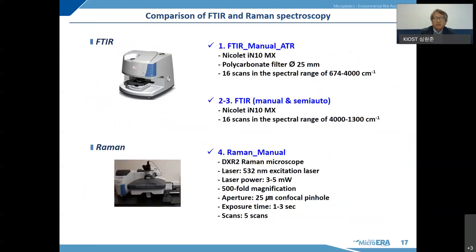This is the specification of the instrumentation we used. For the manual ATR method, we used a Nicolet iN10 MX version. In this case, we used a polycarbonate filter rather than anodisc, because the ATR probe could not be used with anodisc — it's very fragile. For FTIR manual and semi-auto methods, we used the same machine, but the spectral range changed slightly due to anodisc IR absorption. For Raman, we used a Thermo Scientific DXR2 Raman microscope with a 532-nanometer laser at 3.5 milliwatt power, a 25-micron pinhole, and an exposure time of one to three seconds with five scans.